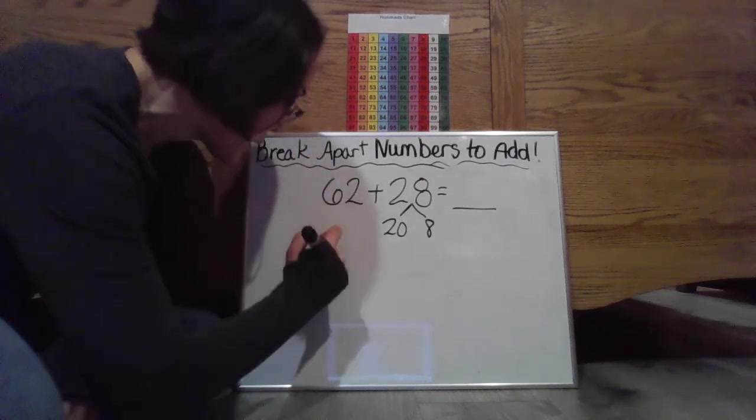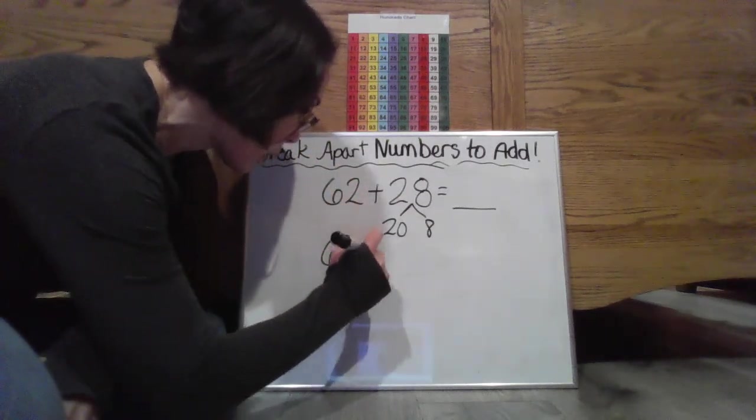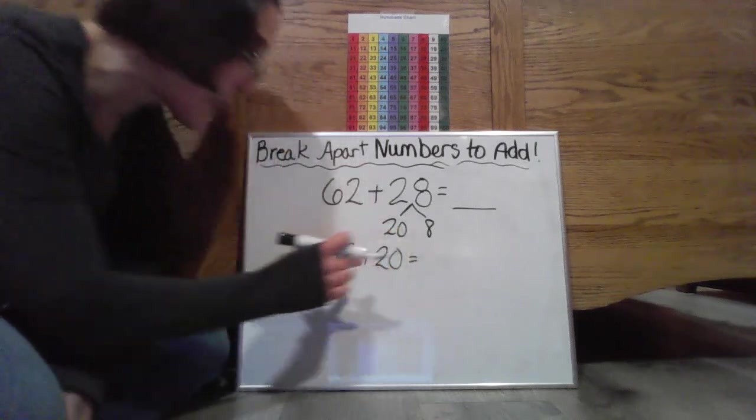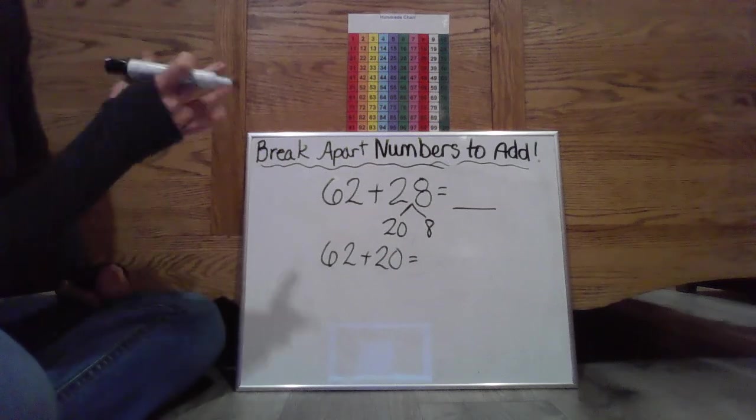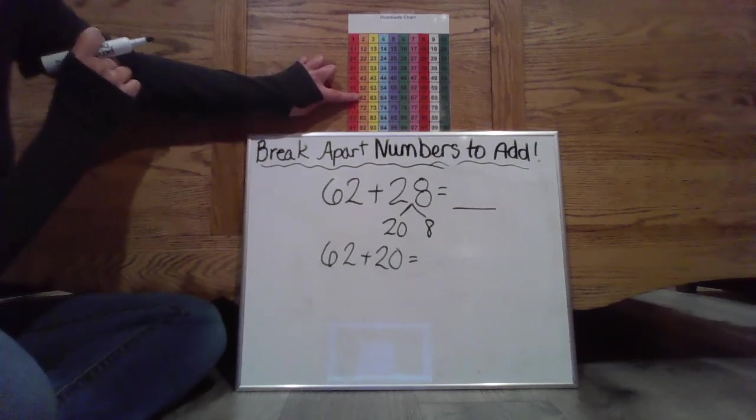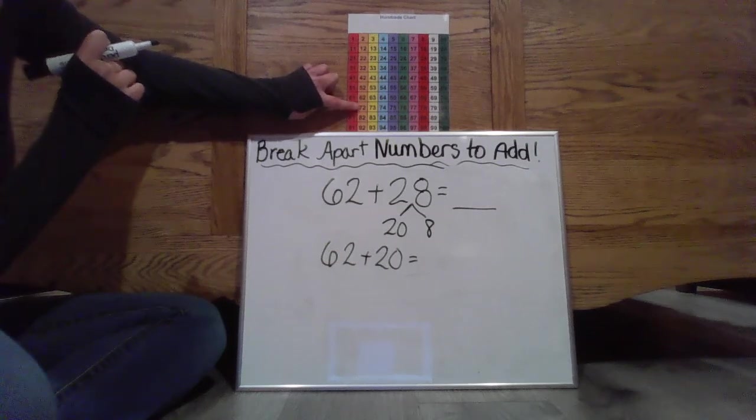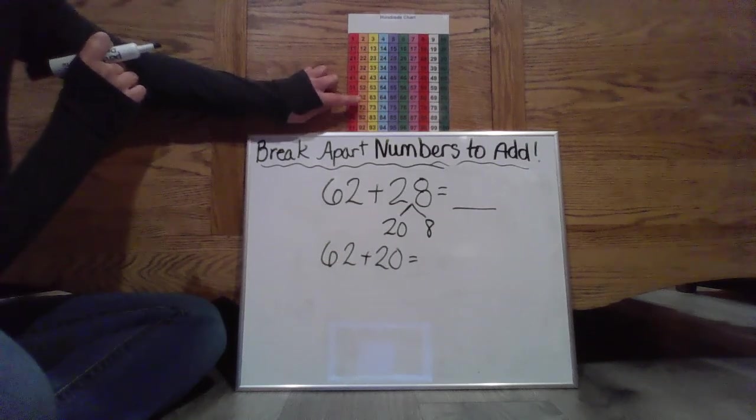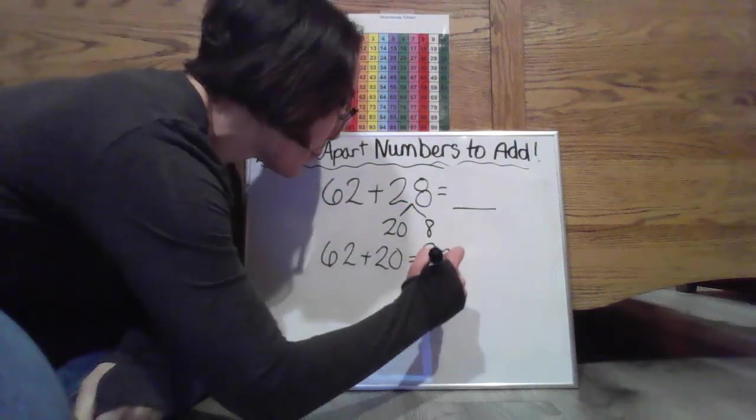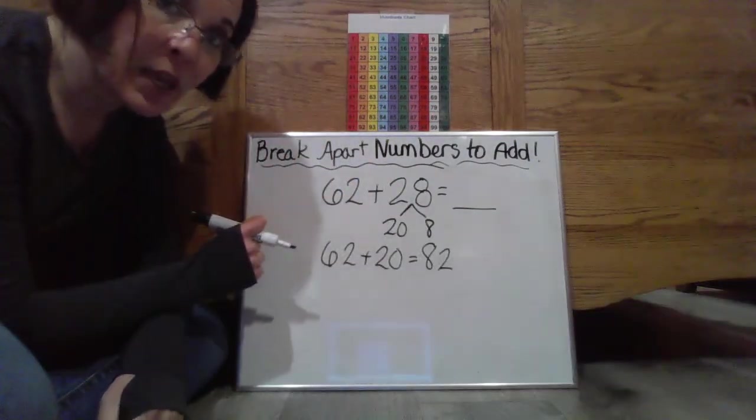So I'm going to start with my 62 plus I want to add those tens plus 20. 62 plus 20. Here I might use my chart as my helper. 62 plus 1020 or one, two tens. That's now going to bring me up to 82.